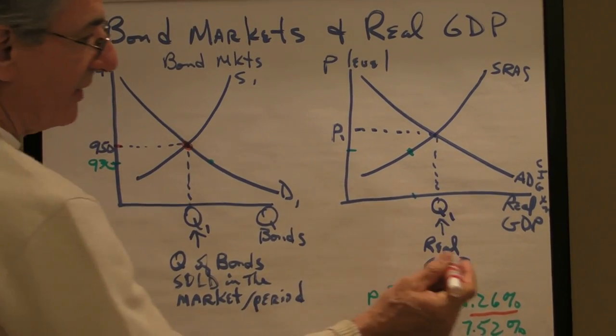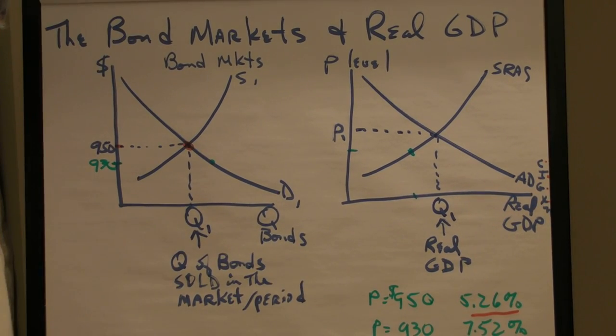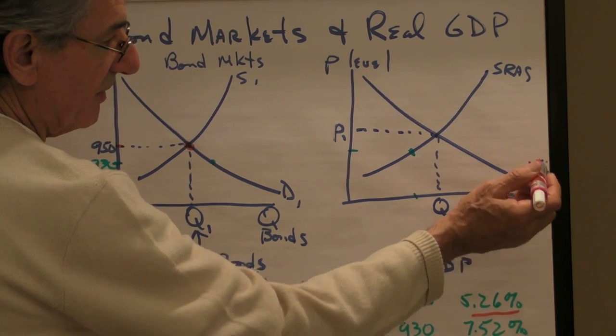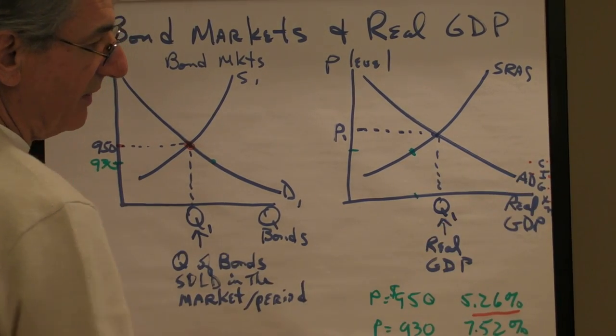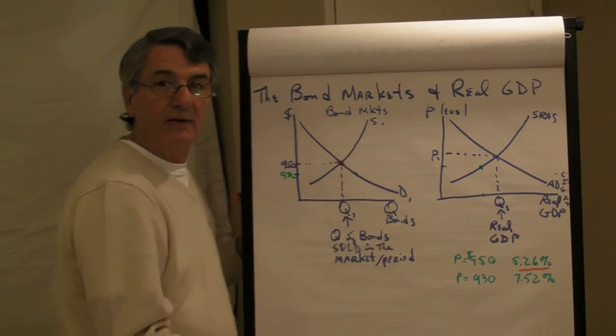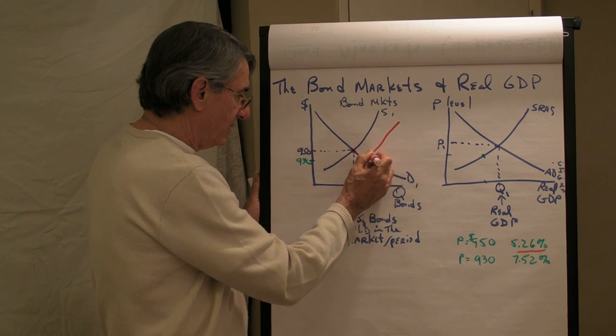Well, do interest rates affect aggregate demand? The four components of aggregate demand are consumption, investment, government, and net exports. If the interest rates are 5.26%, a certain number of cars will be purchased, a certain number of investments will be made, etc. But what would happen if, for instance, the supply of bonds increases?